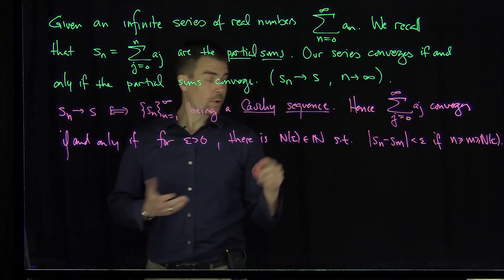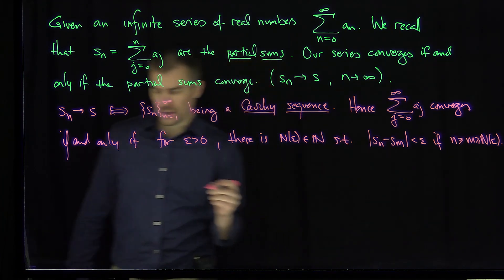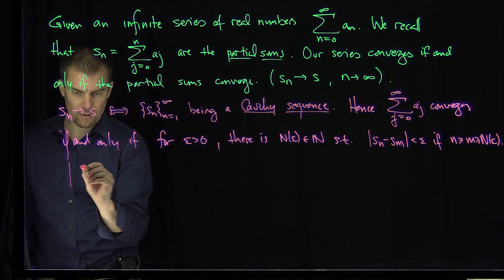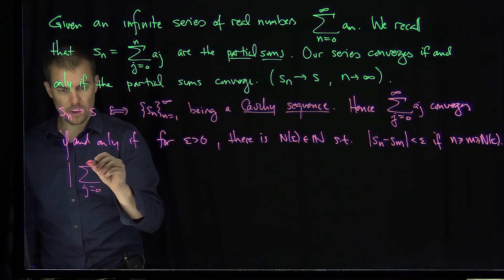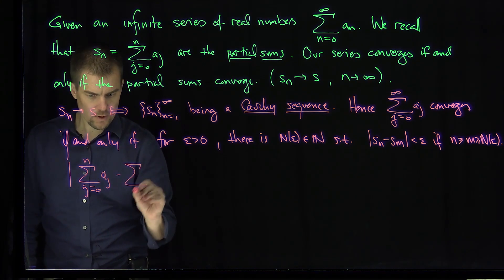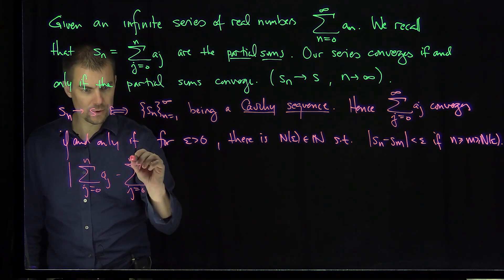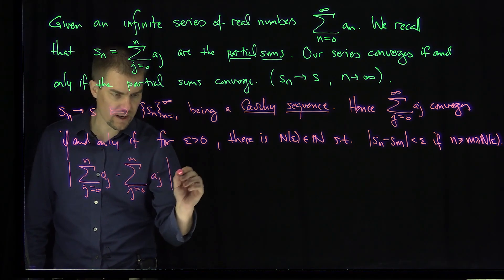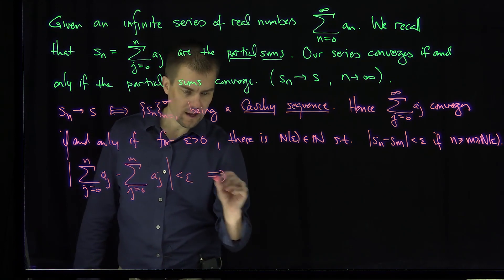So there we have it. Now, what we can do is write out what this means. This exactly means that the absolute value of the sum j from 0 to n of a_j minus the sum j from 0 to m of a_j is less than epsilon, which is exactly equivalent to what?